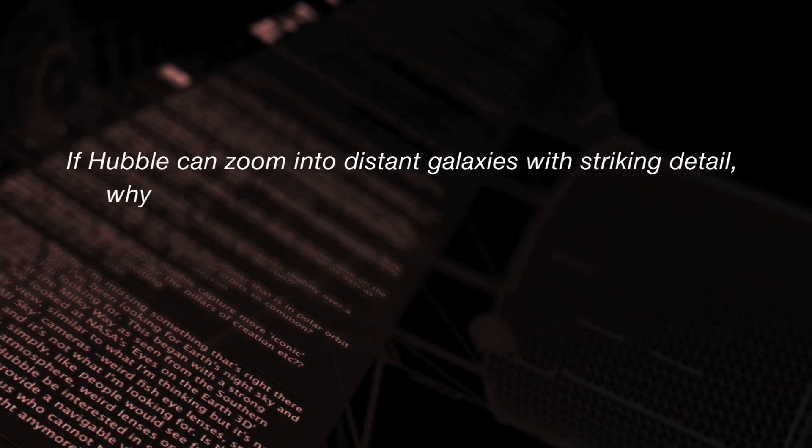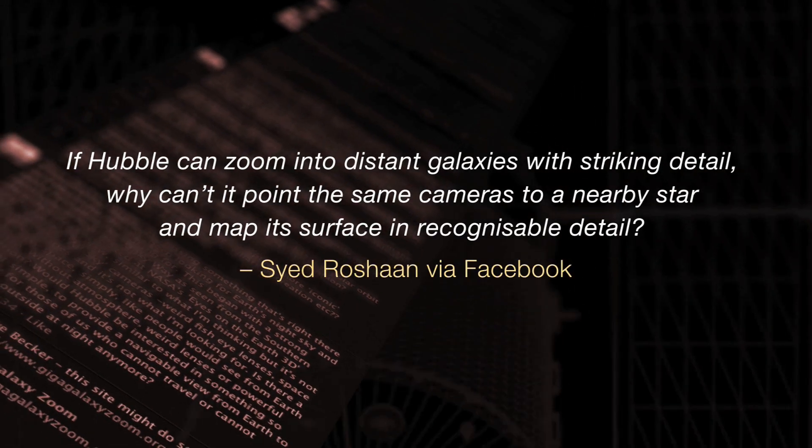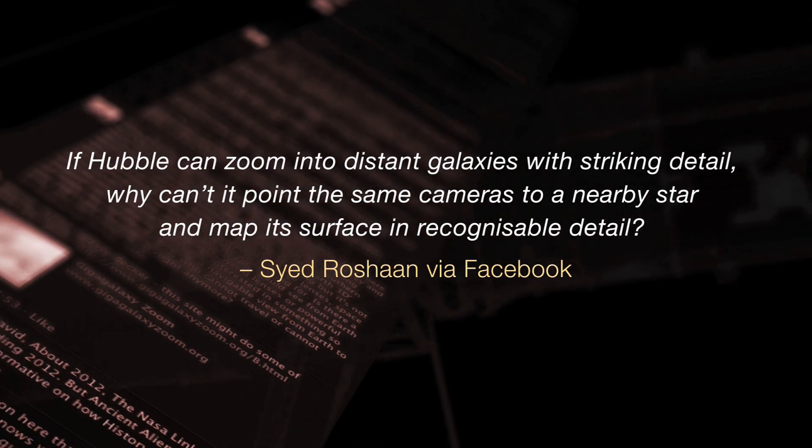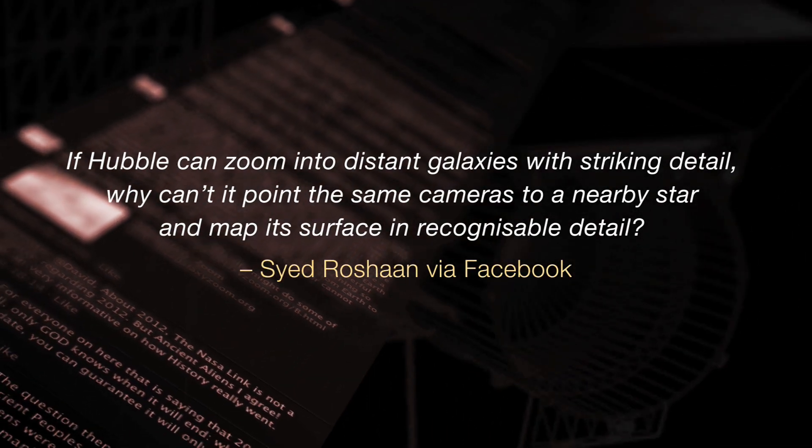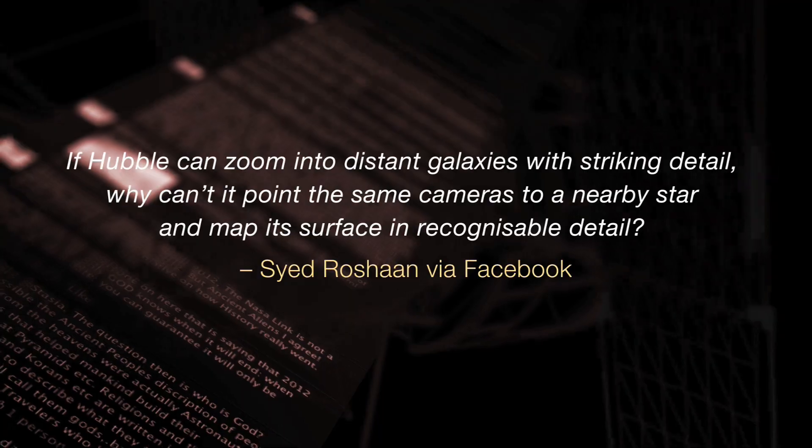If Hubble can zoom into distant galaxies with striking detail, why can't it point the same cameras to a nearby star and map its surface in recognizable detail? This is the star Betelgeuse. It's a very big star and it's quite close to us, only a few hundred light years away.